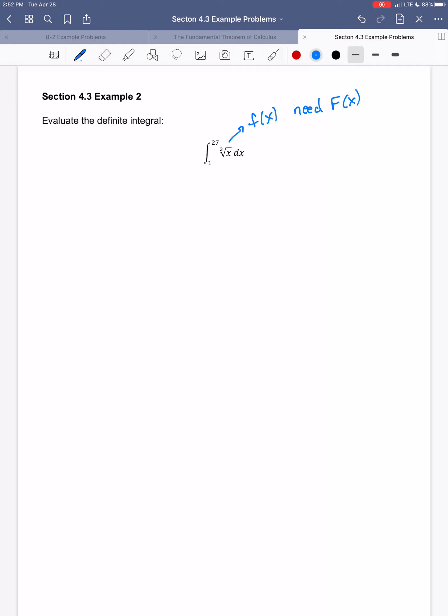To take this antiderivative of a cube root, I'm going to have to rewrite that with an exponent. So this is going to be the integral from 1 to 27. Remember, a cube root is the same thing as the one-third power.